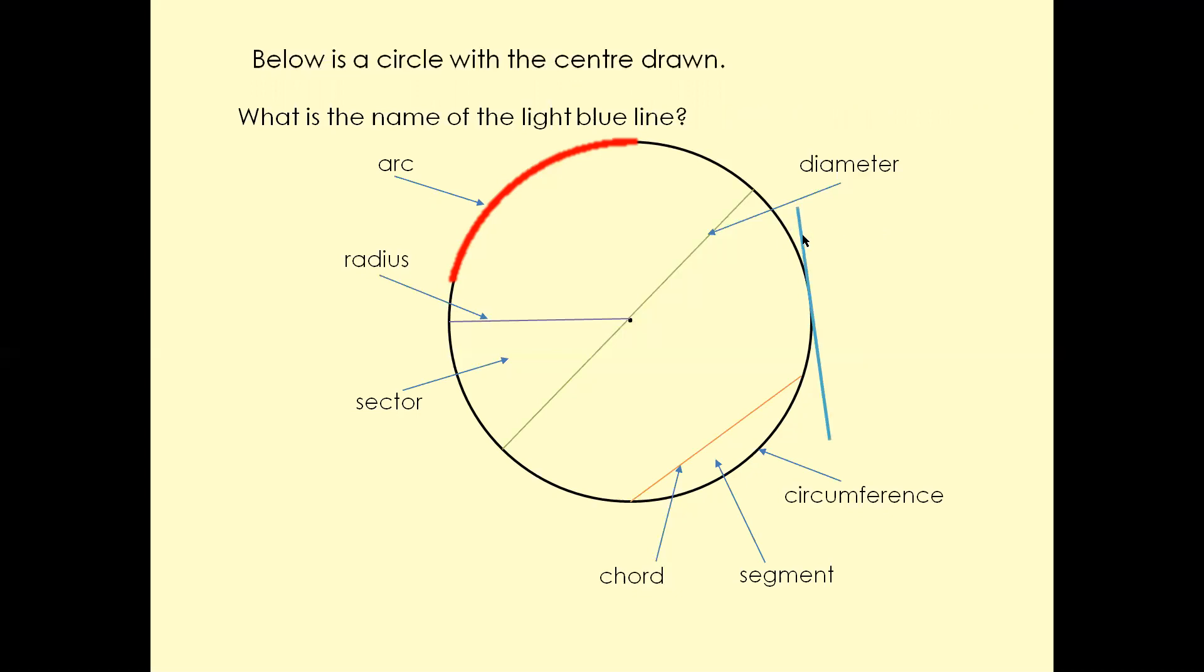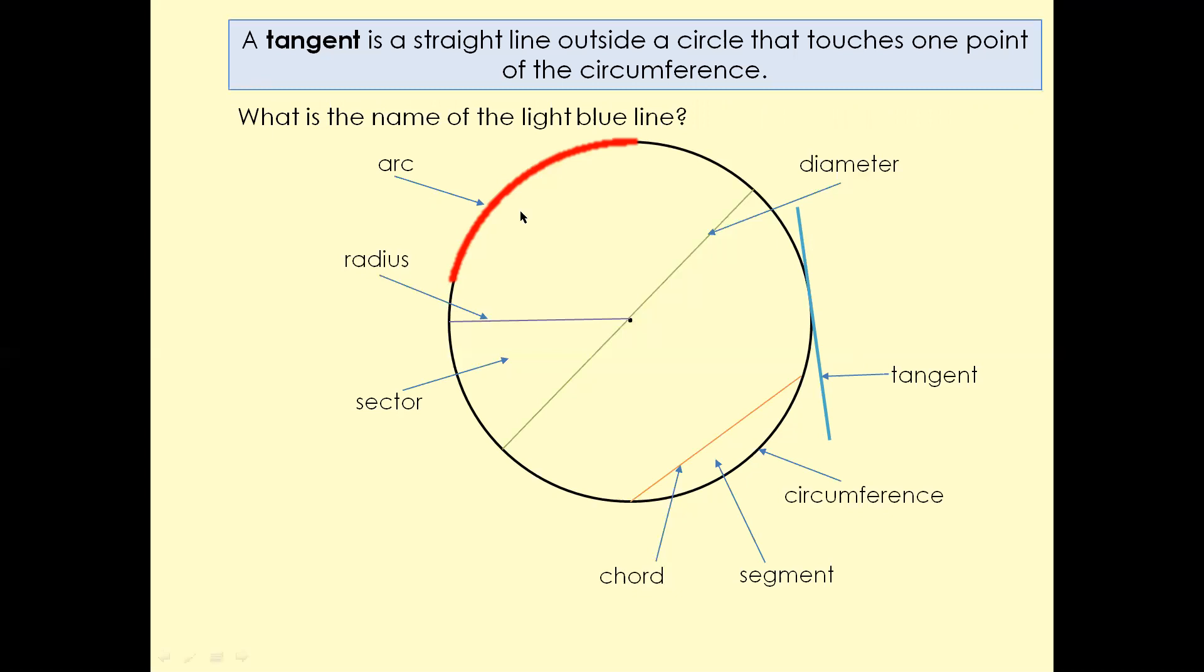What's the name of the blue line here? That line is called a tangent. A tangent is a straight line outside a circle that touches the circle at only a single point of the circumference.